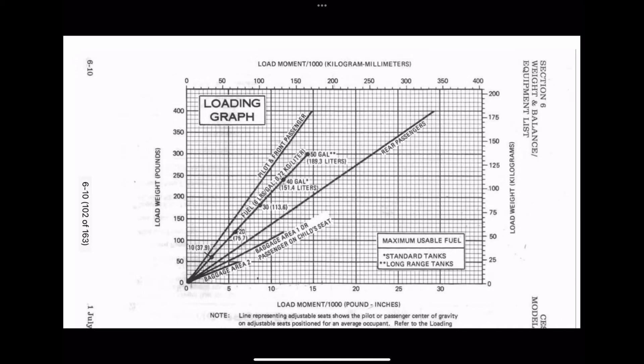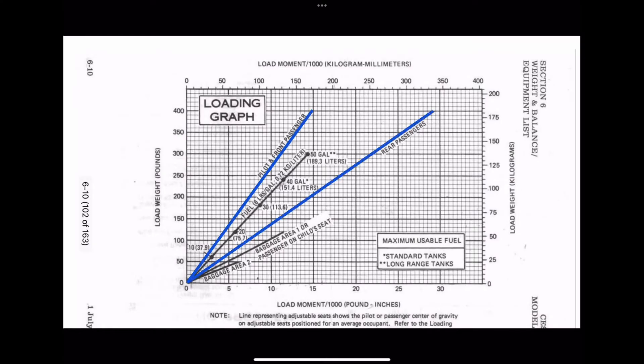We now know we can pack everything into the airplane and still be underweight. Now we can look at balance, and to do this we'll need to use a loading graph. This is the loading graph for a Cessna 172N; most loading graphs have the same components. The left axis is weight, using increments of 10 pounds per line. The bottom axis indicates the moment, using increments of 500 pound-inches per line. It's very important to understand the scale used for each axis. The loading lines each represent a loading station — for example, the front seat, the back seat, baggage area one, baggage area two, and the fuel tanks.